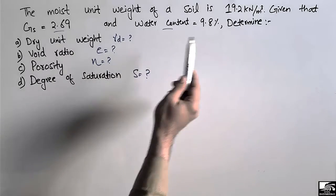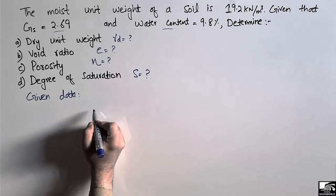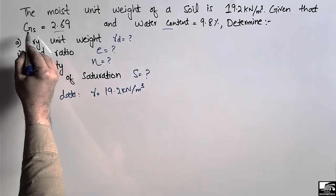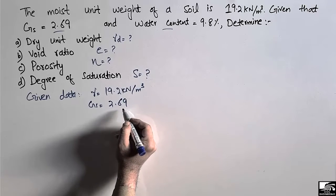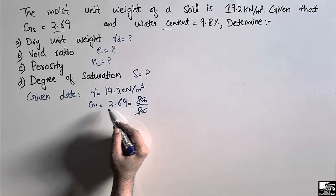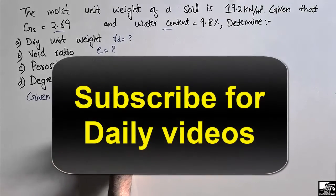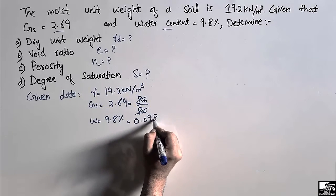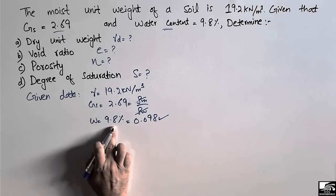The given data are: unit weight of the soil = 19.2 kN/m³, specific gravity = 2.69 (unitless, since it is the ratio of two densities — density of material divided by density of water). Water content is 9.8%; converting from percentage to decimal we divide by 100, giving 0.098. In the equations we must use the decimal value, not the percentage.